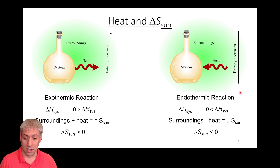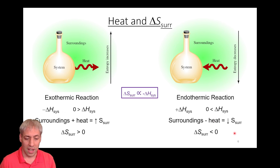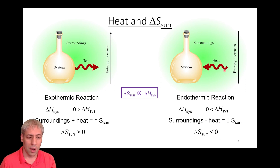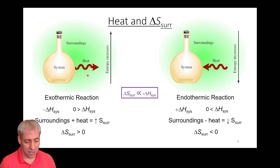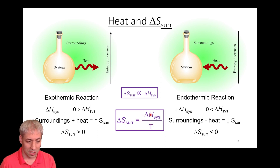Alternatively, for an endothermic process, energy is gained by the system through heat transfer, meaning the temperature of the surroundings effectively goes down — we're seeping energy out of the surroundings, giving a negative delta S of the surroundings. So we have this proportionality: delta S of the surroundings is equal to negative delta H of the system over the temperature.